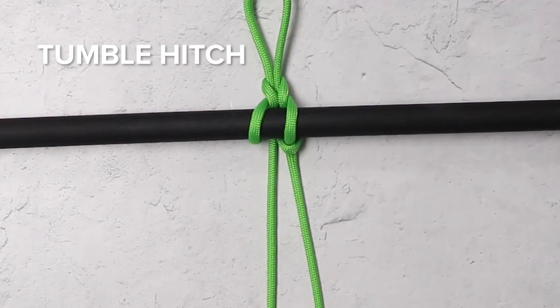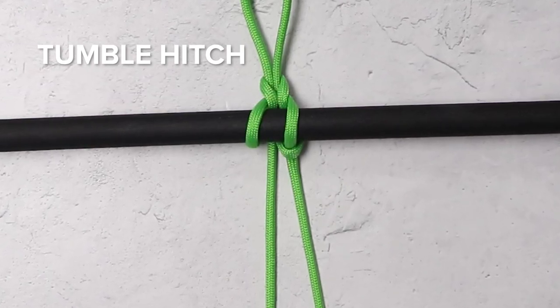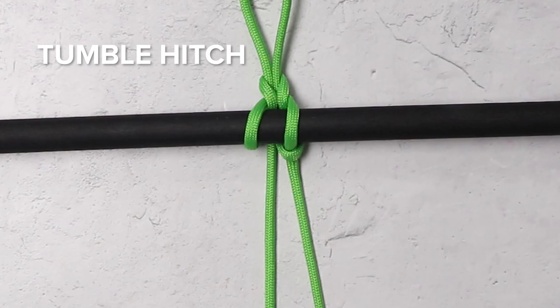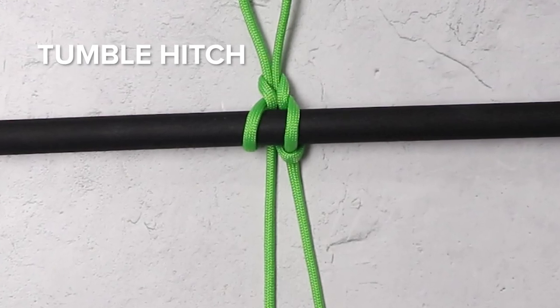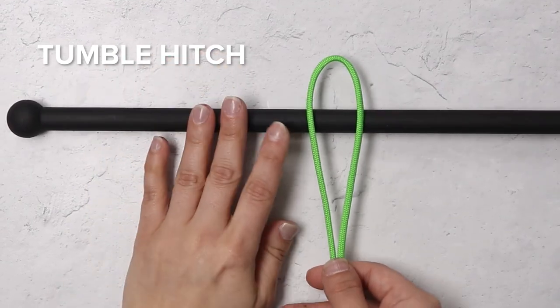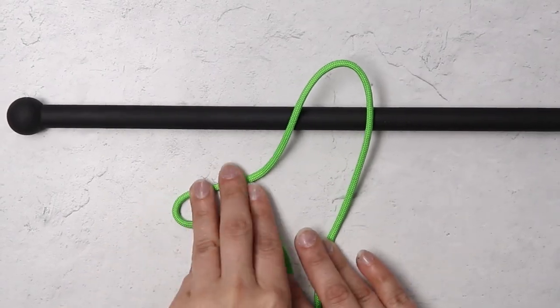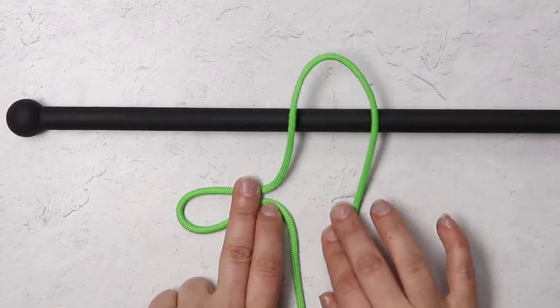Our last knot is going to be the tumble hitch. So out of all of the knots that we've talked about today, this knot is going to be the most secure and the one that can bear the heaviest load. To start the tumble hitch, you will take a bite or loop and lay it over the top of where you'll be hitching to. In this case again my dowel.